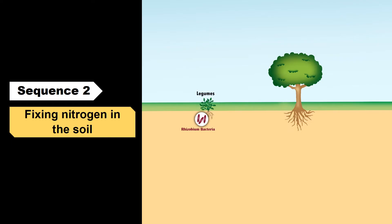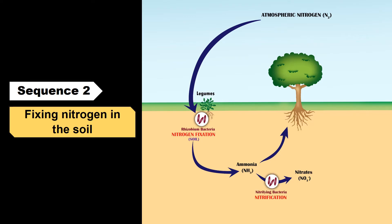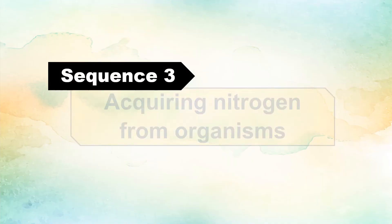So again, sequence 2 summarized: The bacteria living in the roots of legumes can convert nitrogen gas in the atmosphere into ammonia through nitrogen fixation in the soil. Some ammonia will be absorbed by the roots of plants, and some will be converted into nitrates by nitrifying bacteria through the process of nitrification. These nitrates will then be absorbed by the plants.